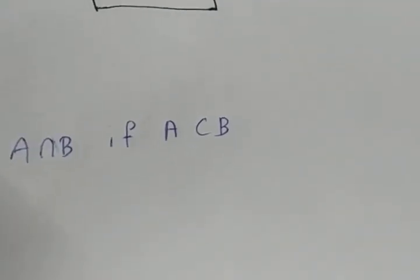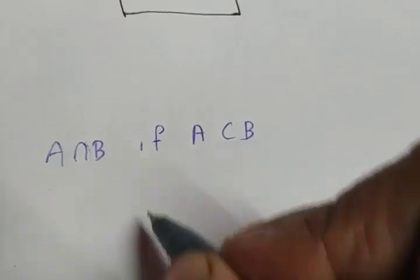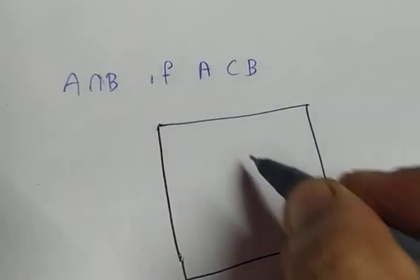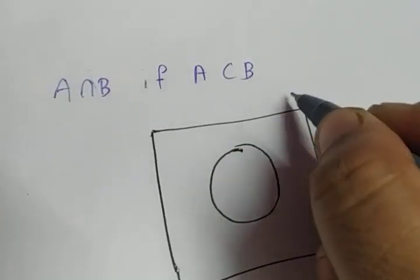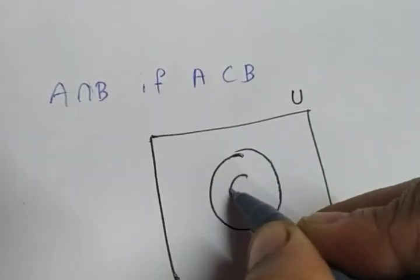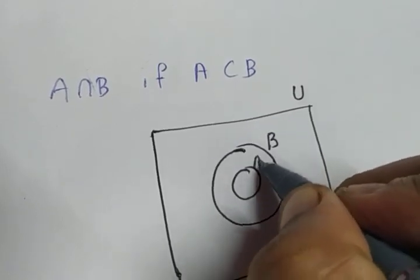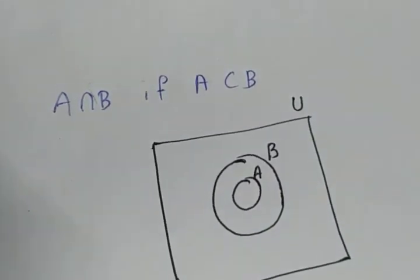We need to find A intersection B with the condition A subset of B. So what you have to do there is draw the universal set. It is given that A subset of B. So B will be the bigger set, A will be the smaller set. A subset of B is given.